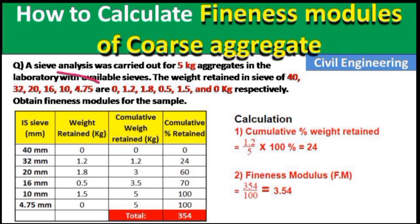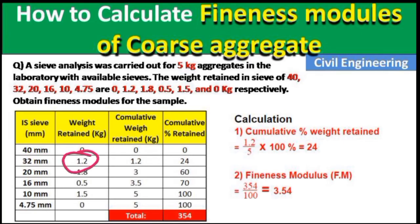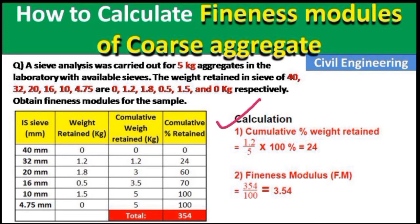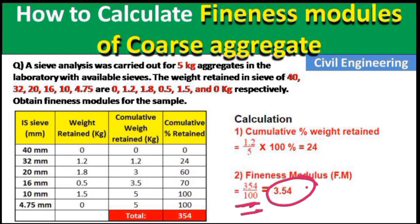We need to find the fineness modulus of this aggregate. The data is tabulated with sieves of 40 mm, 32 mm, 20 mm, 16 mm, 10 mm, and 4.75 mm. On the 40 mm sieve, 0 kg was retained; on the 32 mm sieve, 1.2 kg; on the 20 mm sieve, 1.8 kg, and so on. Now we calculate the cumulative weight retained for each sieve, then divide by 100 to get the fineness modulus.